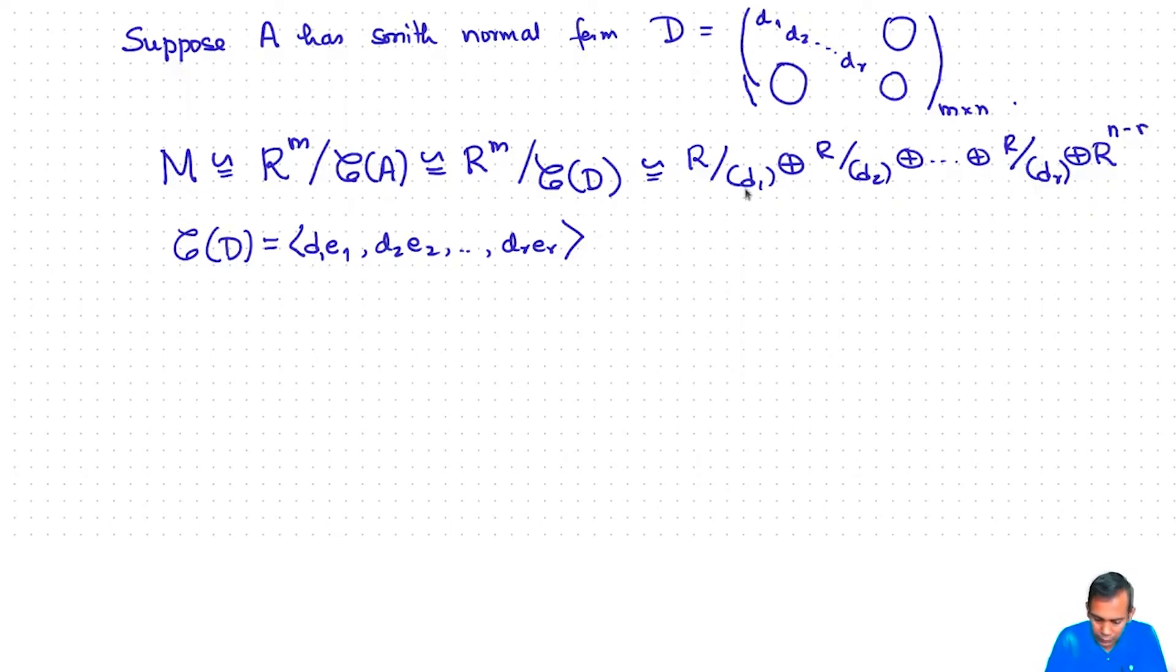Now it is possible, quite possible, that some of these—we have also this condition that the ideal generated by d1 is larger than or equal to the ideal generated by d2—it is quite possible that some of these d1, d2 and so on are units. But in that case, R mod d1 is going to be trivial. So disregarding those, what we get is